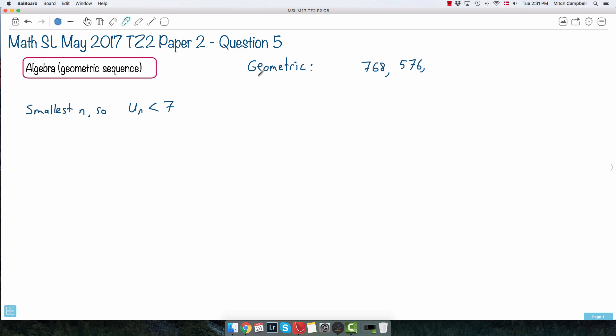We're told that a sequence is geometric, and we're told that the first term is 768, and that the second term is 576. So we don't know the rest of it, it sort of goes on dot, dot, dot. And what they ask, it sounds really complicated. They want the smallest value of n so that the nth term is less than 7.